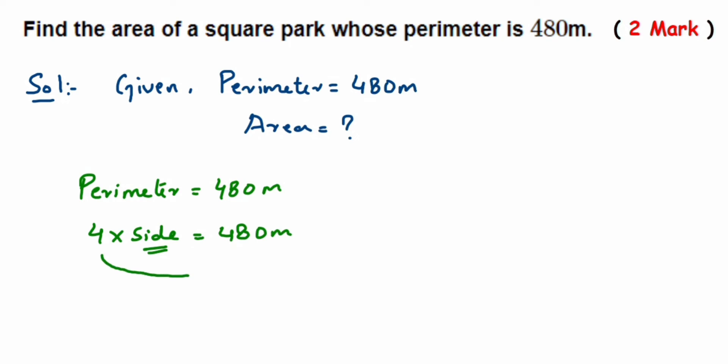So side will be equal to... now 4 is in multiplication. When you take this to the other side, it will come in division. Now we can cancel 480 and 4. In the 4 table itself, this is 4 ones are 4, 4 twos are 8, and then this zero.